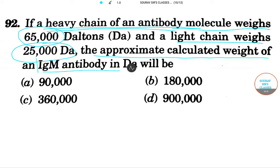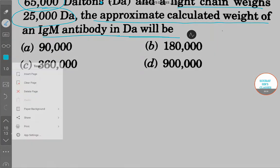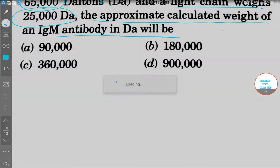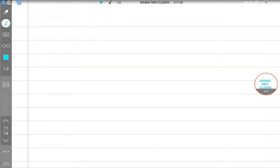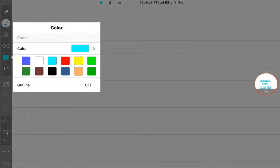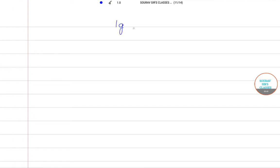So this is an IgM antibody, and that will be what? Let me first insert a page. First of all, IgM has a pentameric structure.